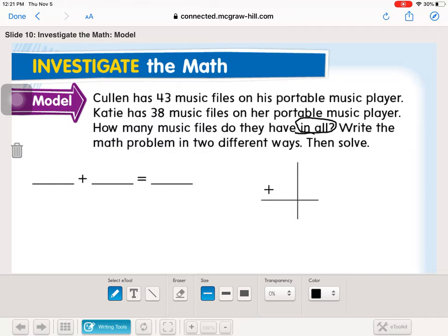Write the math problem in two different ways and then solve. So our two numbers that we're working with are Colin's 43 and Katie's 38. We can write it like that. Or the second way we can write it is like this. I told you yesterday, this is the way that I prefer to write it up and down. That way I've got my ones in a row and I've got my tens in a row and I can regroup and easily see.